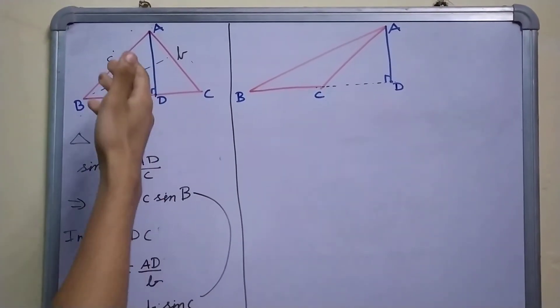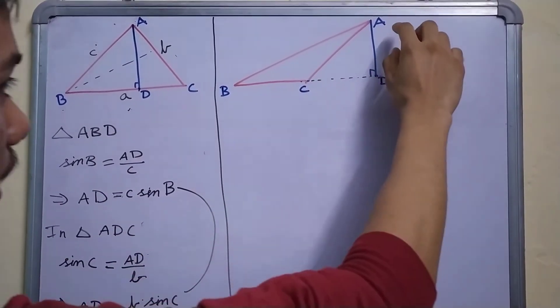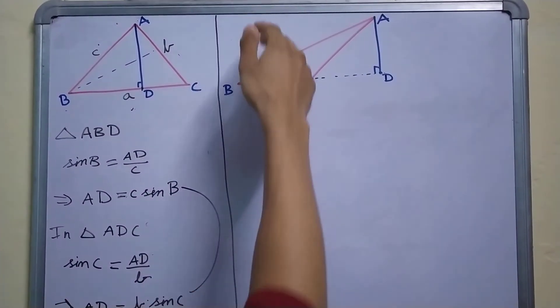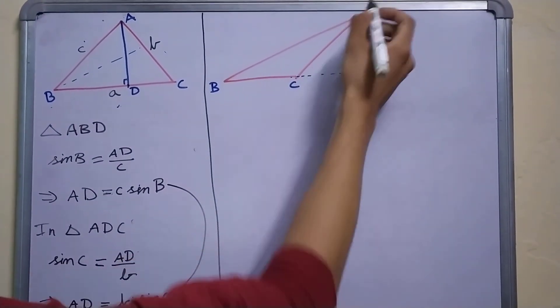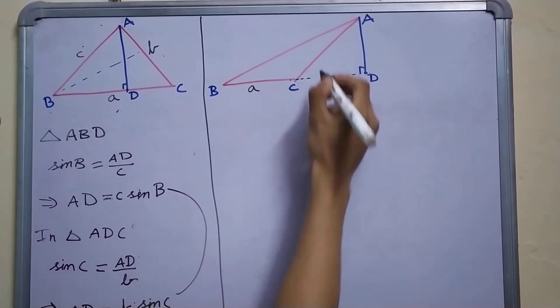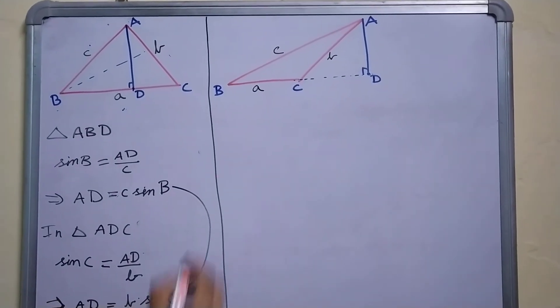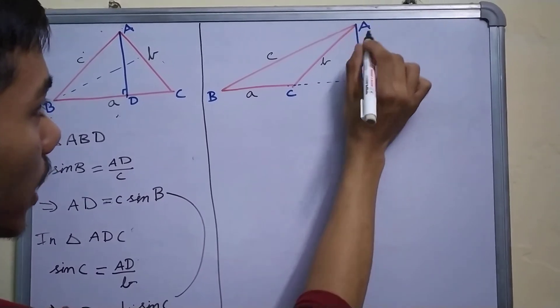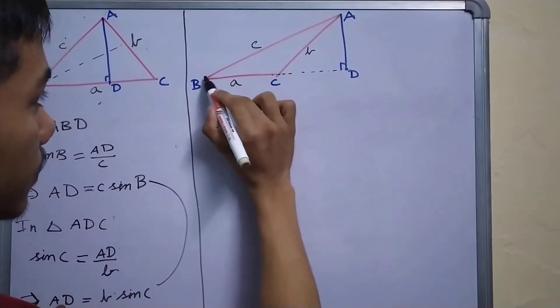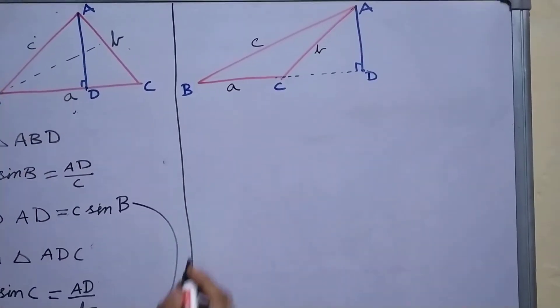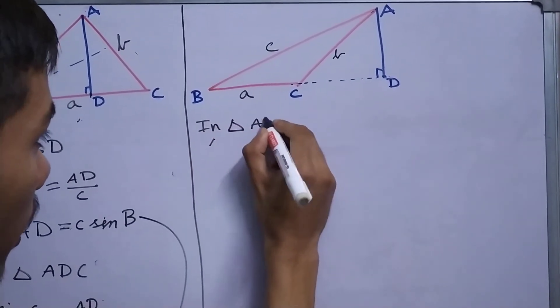So we are labeling it as AD just like in our previous case. And like how we proceeded with the acute angle case, we will be relating AD with the sides and the sines of these angles. So if this is A, this side is small a, this side is small b, this side is small c. Now in this triangle, the big one, ABD.